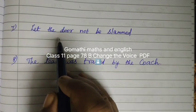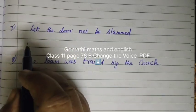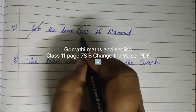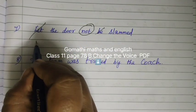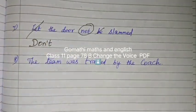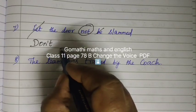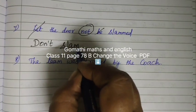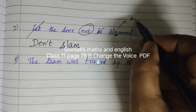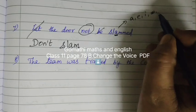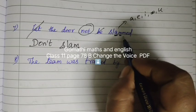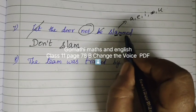Question number seven: 'Let the door not be slammed.' This is passive voice. To convert to active, we write 'Don't slam the door.' The word 'not' in the passive becomes 'don't' in the active imperative form.